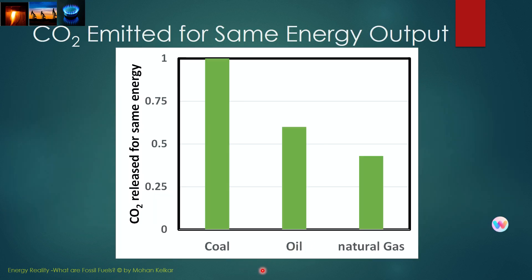The difference between coal, oil, and natural gas is even more magnified when you look at the amount of CO2 released for the same amount of energy. If you assume coal generates 1 unit of CO2 for a certain amount of energy released, then natural gas generates about 0.47 units compared to coal. In other words, for the same amount of energy generated, natural gas generates about half the CO2 compared to coal. This distinction becomes important when we consider that CO2 is the main greenhouse gas and has the biggest impact on temperature change on Earth.